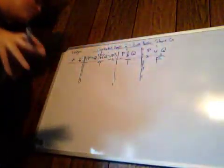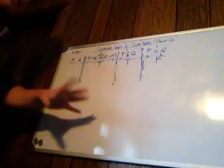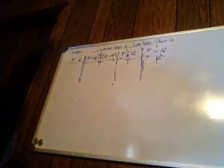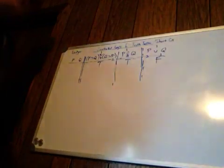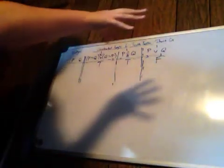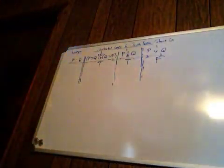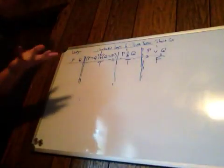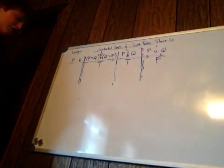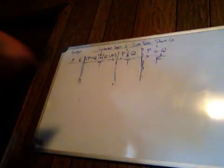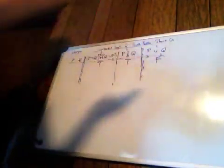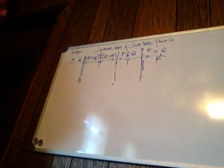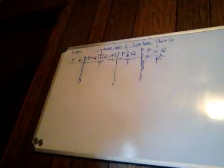Now, as you know from the long way, this is a valid argument. However, if this were an invalid argument, this whole thing would work out fine. I'm going to show you what happens when we run into a contradiction. If this whole thing works out and we have no issues, then we know that it is an invalid argument.